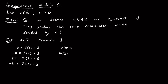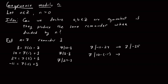7 divides 3 minus 3, because 7 divides 0. I might notice that 7 divides 24 minus 3, because 7 divides 21. I might notice that 7 divides negative 11 minus 24, because this is saying that 7 divides negative 35. And finally, I might notice that 7 divides 10 minus negative 11, which is just saying that 7 divides 21.